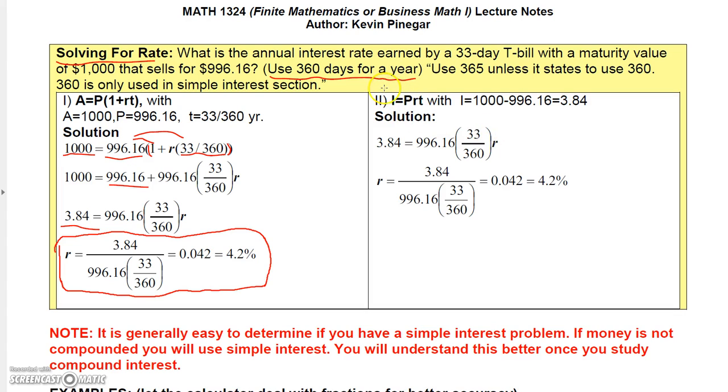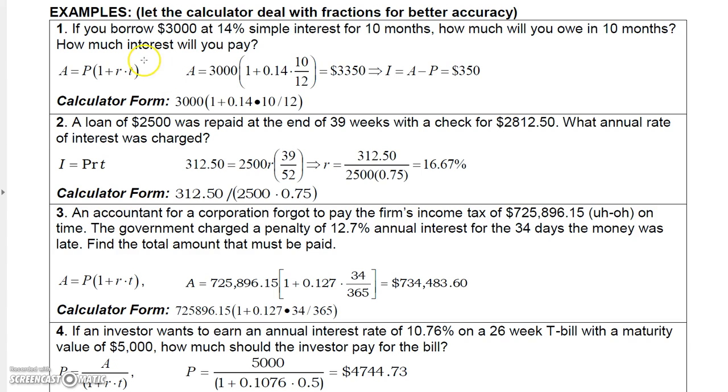And R is 0.042 or 4.2%. You can view this one. This is just another way. You can also solve this with the I equal PRT formula where you calculate the interest first, which is $3.84, and then you can just plug it into I equal PRT. And basically, you'll notice I end up with the same result for either way I solve it. So the answer is 4.2%.